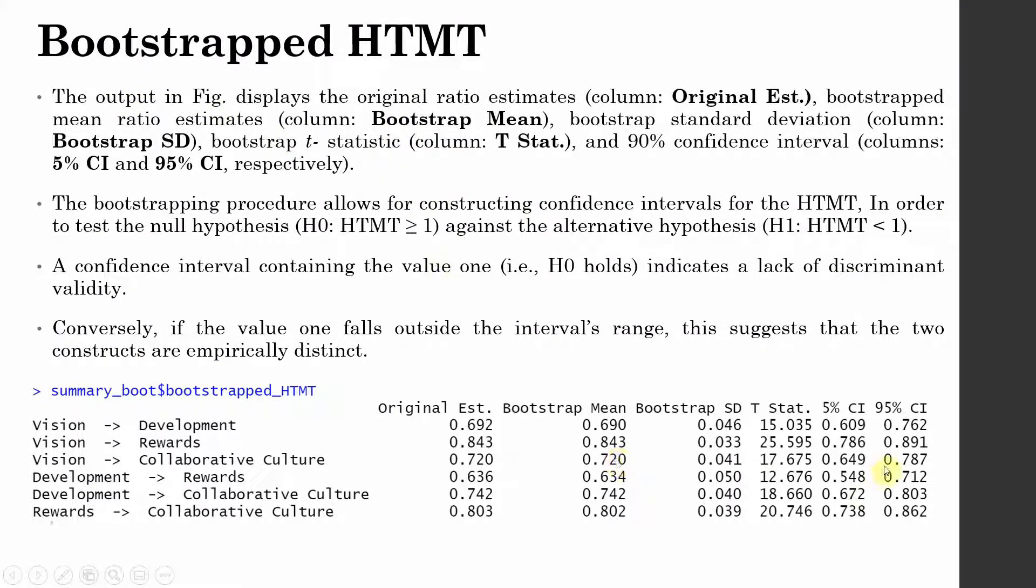Bootstrapped HTMT. The output here displays the original ratios as we saw earlier. The values do not change. And it gives us bootstrapped mean, bootstrapped standard deviation, the T statistics. And what we are interested in is this 5% confidence interval, 95% confidence interval. The bootstrapping procedure allows for constructing confidence intervals.